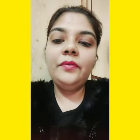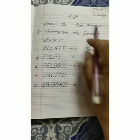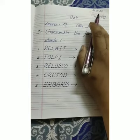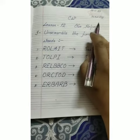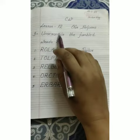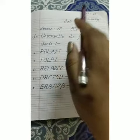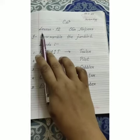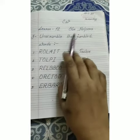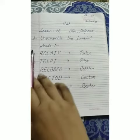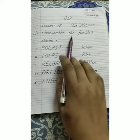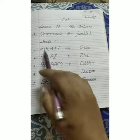Take out your SST notebook and book. We will do today's classwork — our jumbled words. In the first line, you have to write 'Classwork.' In the second line, you have to write 'Lesson 12, Our Helpers, third exercise — unscramble the jumbled words.' This is your jumbled words.